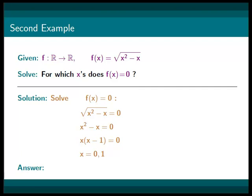So, in conclusion, f(x) is equal to 0 for x equal to 0 or x equals 1.